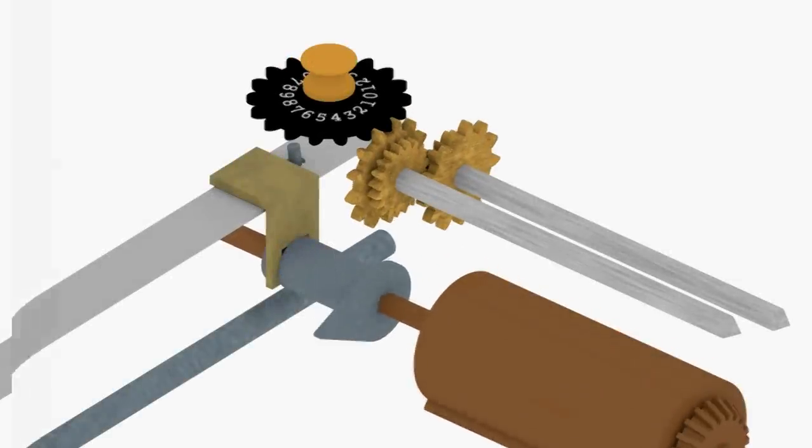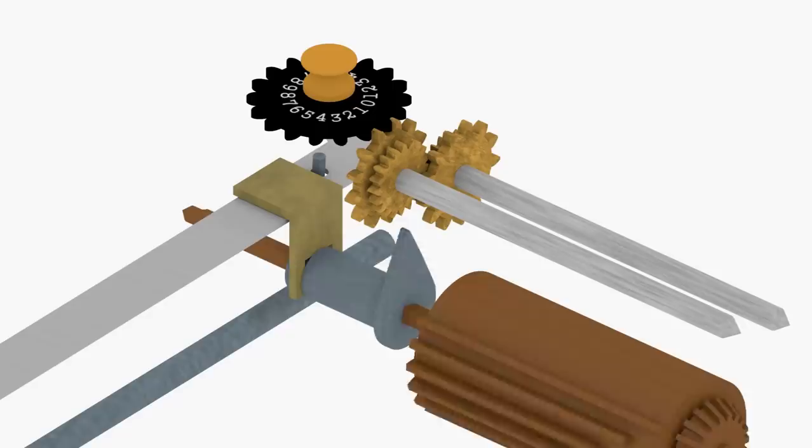The net effect of the gear assembly is that the counter dial is turned clockwise during multiplication and counter-clockwise during division.